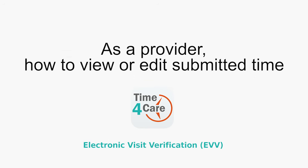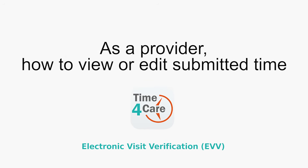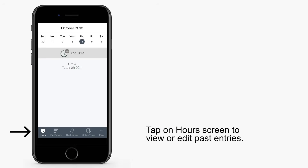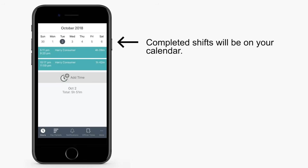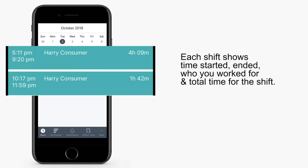In this segment, providers will learn how to view or edit submitted time. First, tap on the hours screen to view or edit past entries. Completed shifts will be on your calendar. Each shift shows the time you started, time ended, who you worked for, and total time for your shift.